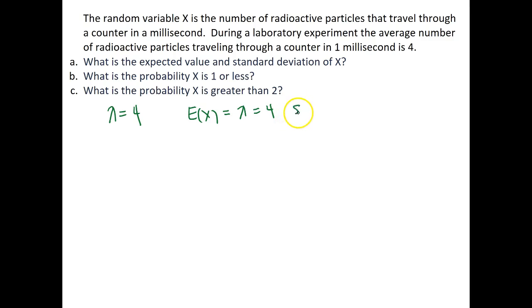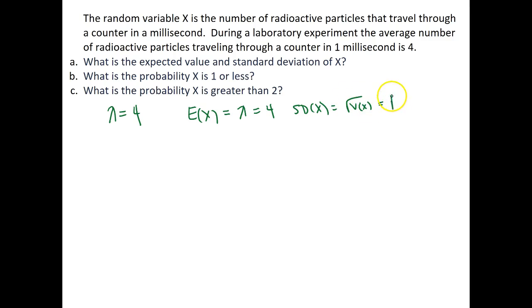The standard deviation of x equals the square root of the variance. For a Poisson distribution, the variance also equals lambda, so the standard deviation is the square root of four, which is simply two.